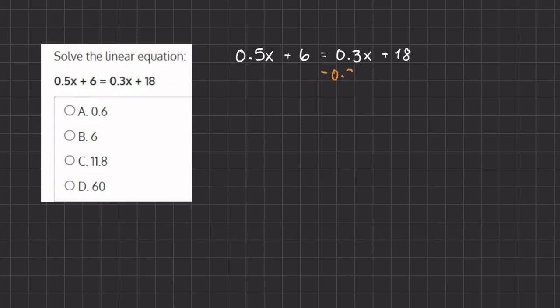So we're going to begin by subtracting 0.3x on both sides, and we're going to subtract 6 on both sides. These will cancel out and we are left with 0.5x minus 0.3x, which leaves us with 0.2x equals 18 minus 6, which is 12.